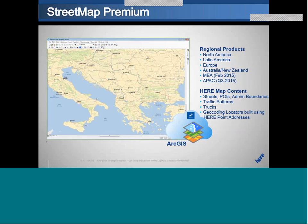StreetMap Premium, which we will not cover today, is probably the most popular ESRI data product. ESRI uses the HERE map content to create StreetMap Premium bundles of data for all regions of the world — North America, Latin America, Europe, Middle East and Africa, and APAC. The HERE map content in StreetMap Premium includes our street data, points of interest, administrative boundaries, traffic patterns, trucks routing data, and geocoding locators built using HERE point addresses.